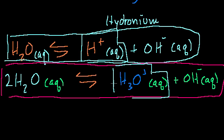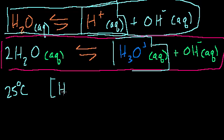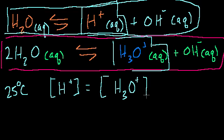So how do you measure this? What is the equilibrium of this reaction? It turns out that in just regular water at 25 degrees Celsius — which is roughly room temperature — with pure water, the concentration of hydrogen ions, which is also the concentration of hydronium cations, equals 10 to the minus 7 molar.